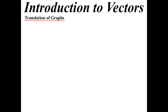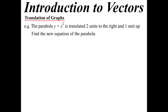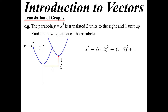We've been looking at translations of graphs. For example, we've got our parabola. If we wanted to translate it two units to the right and one unit up, what's the new equation? So there's our standard parabola. We shift it to the right and one up, and we get this new parabola. x squared shifted to the right became (x minus 2) all squared. Shifted up, it became (x minus 2) all squared plus 1. There's the equation of the new curve.